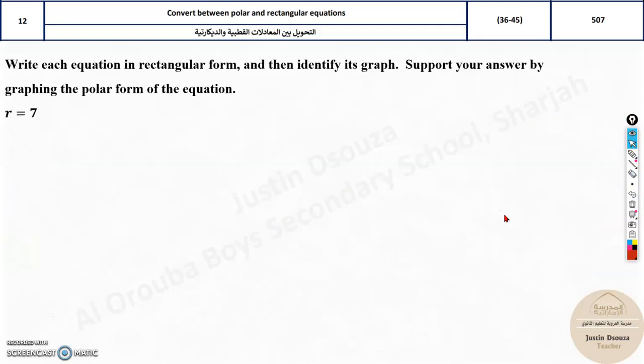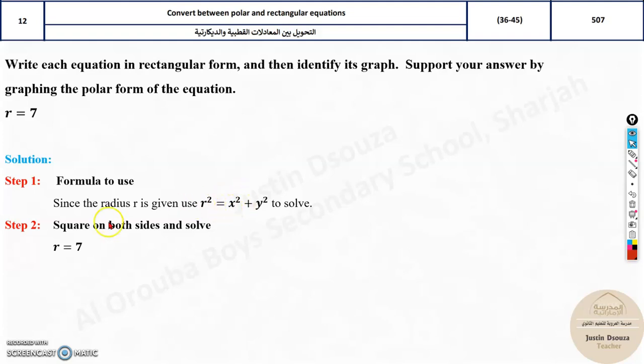Let's look at the other type where only radius is given. This is again so easy - r is 7, just draw a circle of 7 radius, that's it. Anyways, technically to solve it is to use the formula. Since r is known, you know the formula closest to r is r squared equals x squared plus y squared.